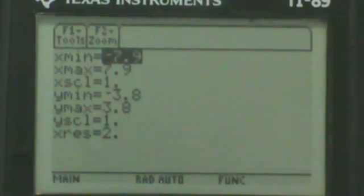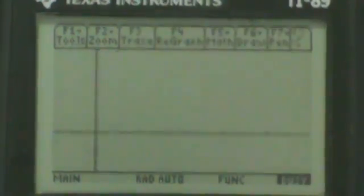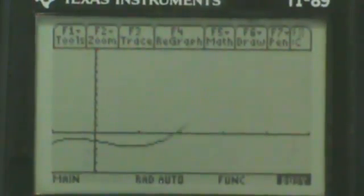So we'll say x min is negative one and x max will be five. x scale is one, y min will be negative five and y max will be 11, and y scale will just be one. So we'll go back to the graph and now here's our function.